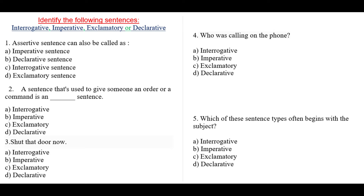Question number two: a sentence that is used to give someone an order or a command is a blank sentence — a) interrogative sentence, b) imperative sentence, c) exclamatory, d) declarative. Question number three: 'Shut that door now!' — a) interrogative, b) imperative, c) exclamatory, d) declarative.